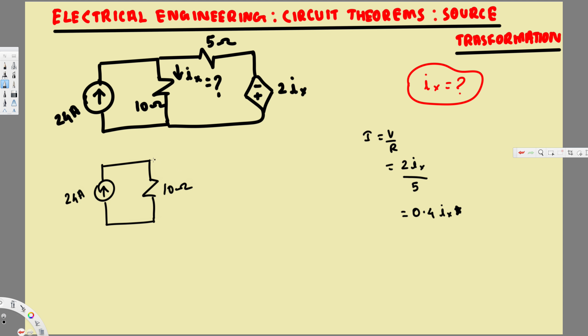Now this is our new current source and this is going to be parallel. Ix is right here and this 5 ohm is going to be parallel, 5 ohm, and then we're going to have the current source.